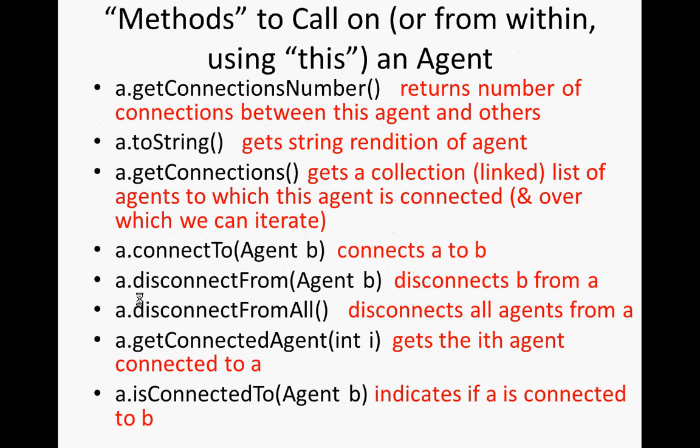We can ask for a string representation — it'll show as a sequence of characters, maybe returning 'person 37'. A dot get connections will list all the connections associated with this agent, giving us back a list. We can go through and find out each one's name, income, total income of its connections. These are different kinds of methods: some compute a value, some get a reference.